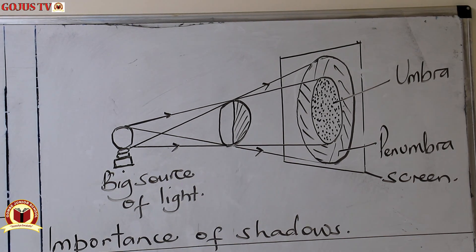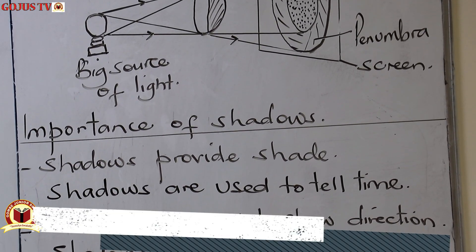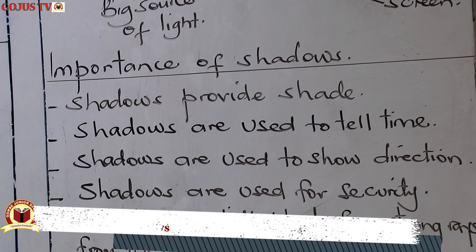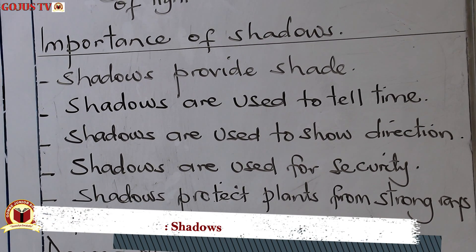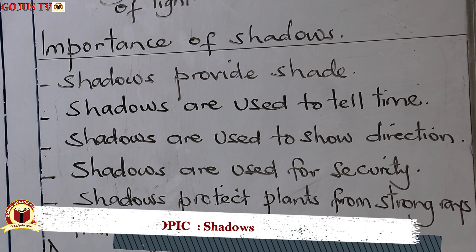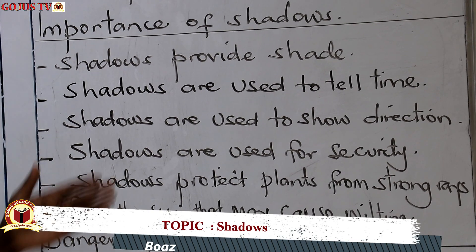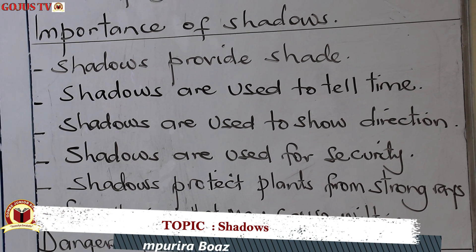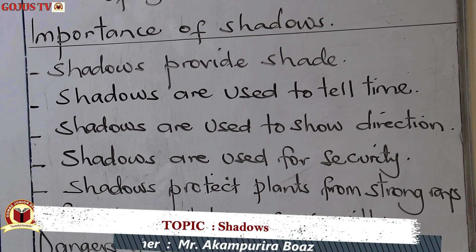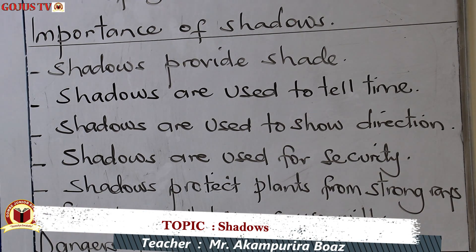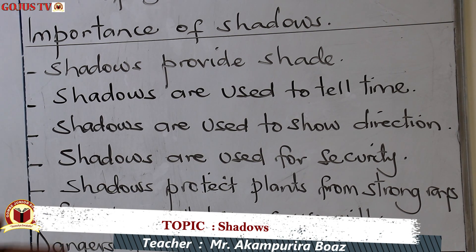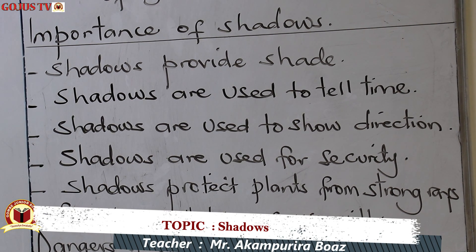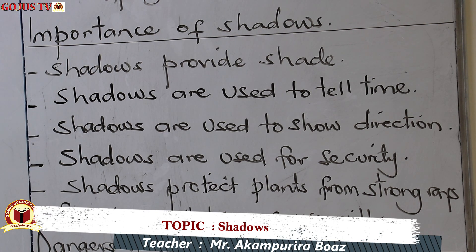How are shadows important? First, shadows provide shade, especially when it's hot outside — you tend to move under trees or inside houses to take shade. Second, shadows are used to tell time. These days, because of a modernized world, you may not believe it, but people of the past were able to tell time using shadows, and there are still some people who can use them.